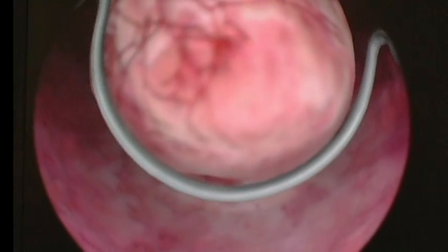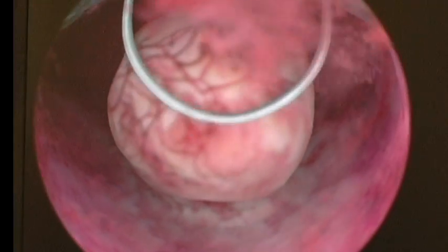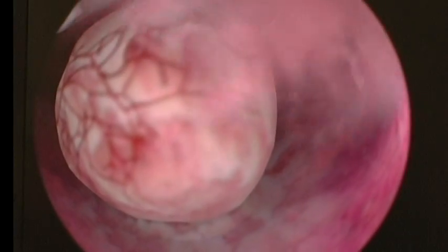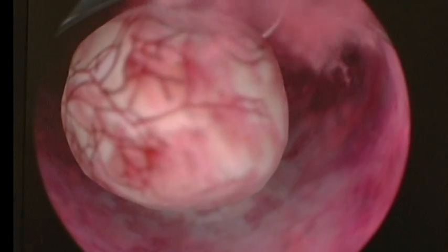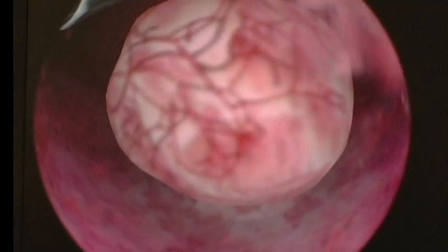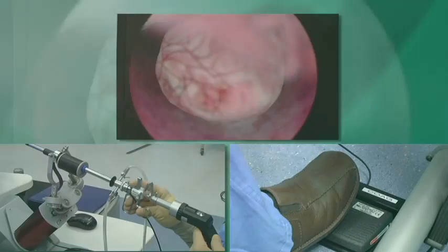Once you visualize the cavity, you can actually take care of your submucous fibroid with your working element and the use of your electrosurgical pedals. Here we can see we're behind the fibroid and we can use our loop.